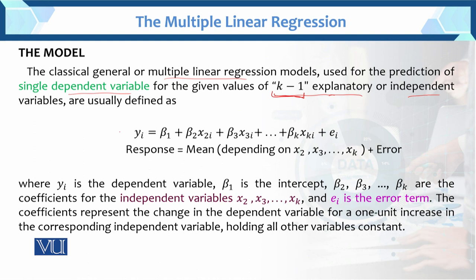This is the model: yi = β1 + β2·x2i + β3·x3i + ... + βk·xki + εi (the error term). With the error term added, this becomes a statistical regression model.